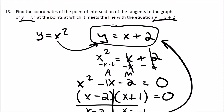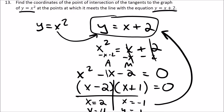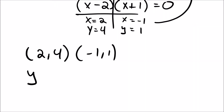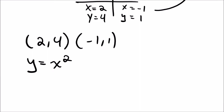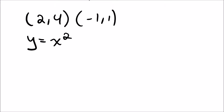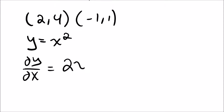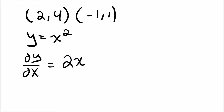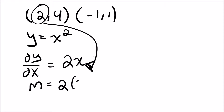The question wants us to find the coordinates of the point of intersection of the tangents to y equals x squared at those points. To get the tangent lines, we need the derivative to find the slope. The derivative of x squared is 2x. For the point (2, 4), the slope is 2 times 2, which equals 4.